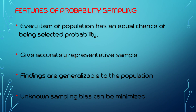Unknown sampling bias can be minimized. Unknown sampling bias can occur in research, but because everyone has an equal chance of being selected, the unknown sampling bias can be minimized.